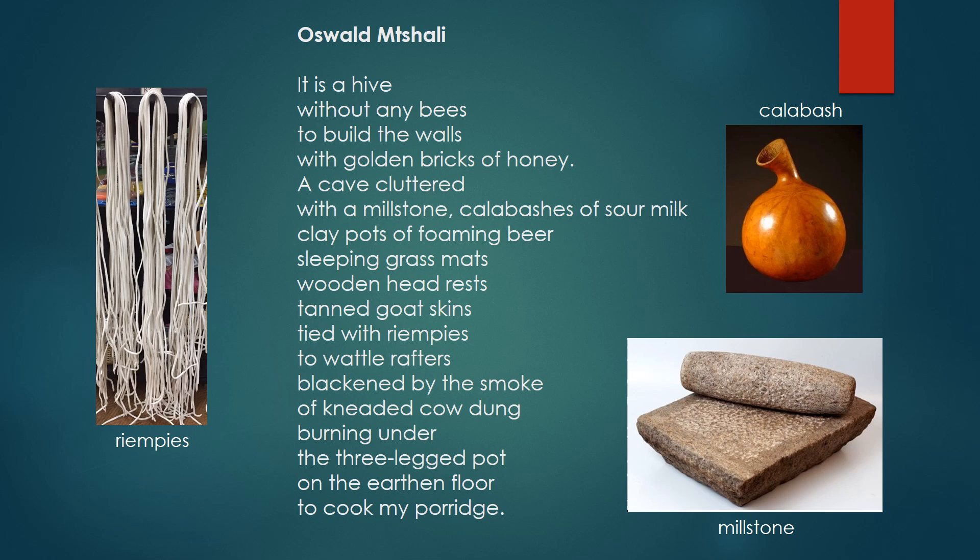Inside My Zulu Hut by Oswald Mchali. It is a hive without any bees to build the walls with golden bricks of honey, a cave cluttered with a millstone, calabashes of sour milk, clay pots of foaming beer, sleeping grass mats, wooden headrests, tanned goatskins tied with rimpies to wattle rafters blackened by the smoke of kneaded cow dung, burning under the three-legged pot on the earthen floor to cook my porridge.